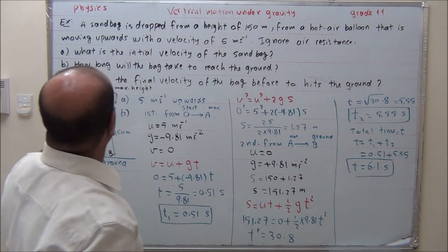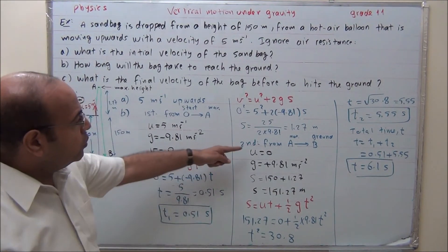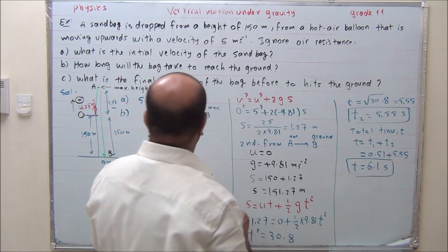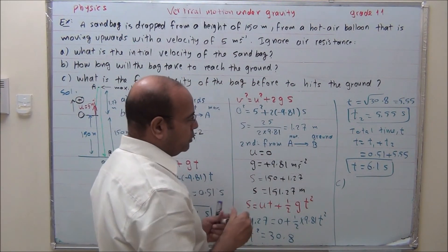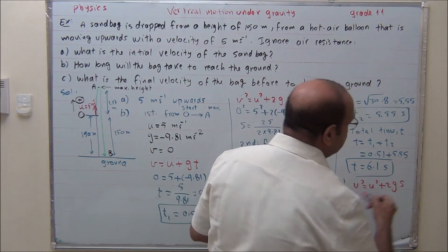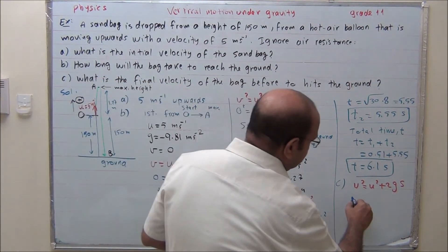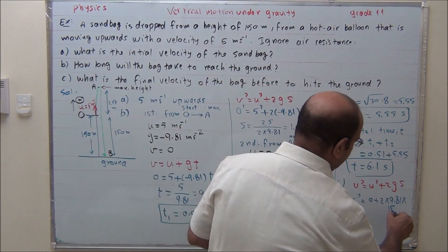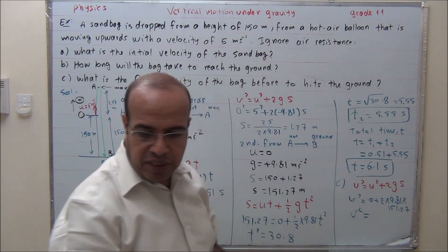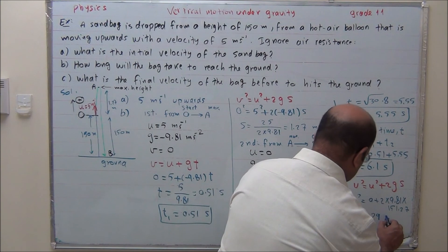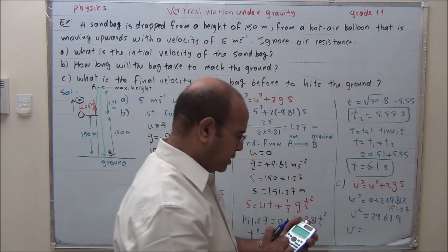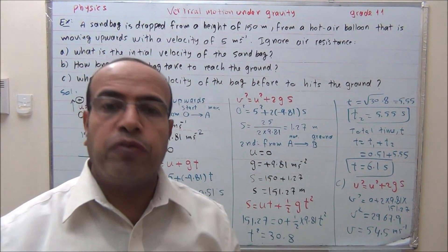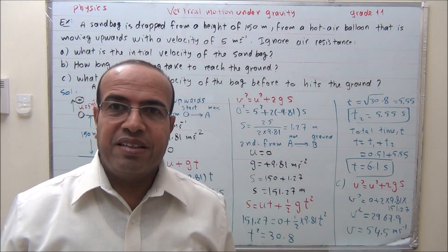We also need the final velocity just before the sandbag hits the ground. Using V squared equals U squared plus 2GS with U equals 0, G equals 9.81, and S equals 151.27: V squared equals 0 plus 2 times 9.81 times 151.27, which gives V squared equals 2967.9. Taking the square root, the final velocity is 54.5 meters per second. I hope you understand this. Thank you.